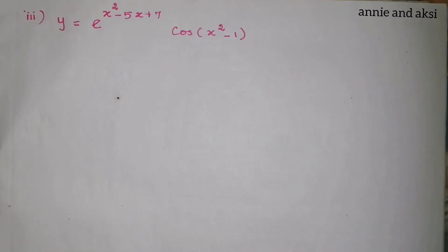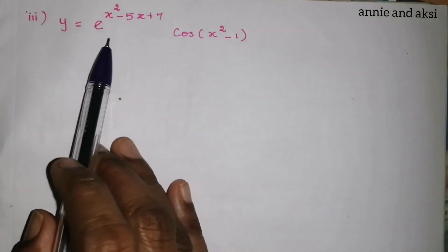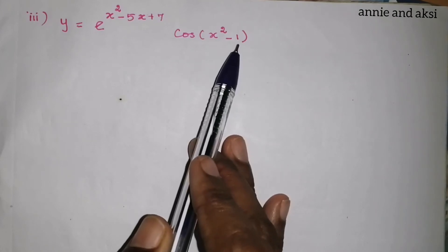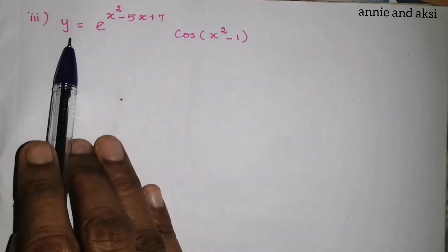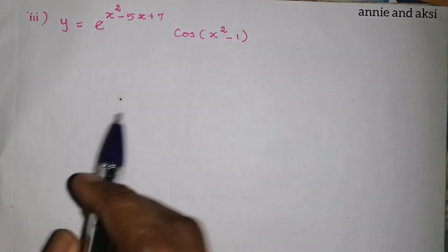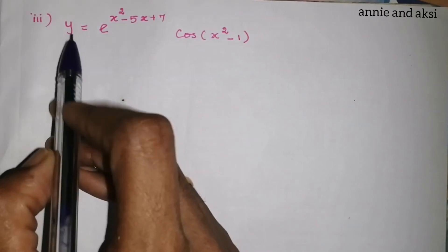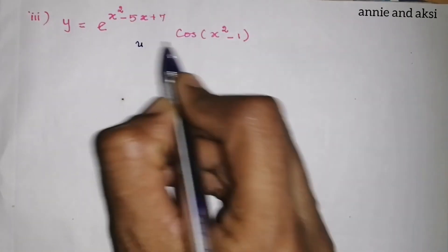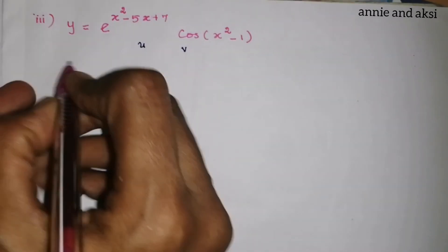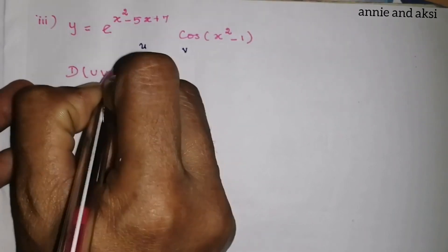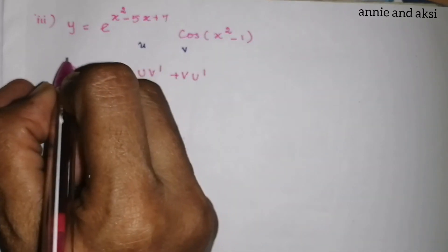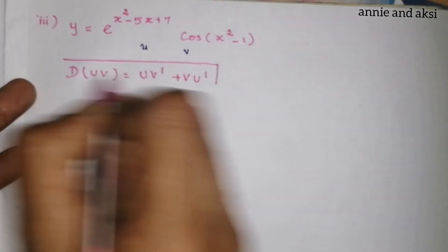For the third subdivision, y is equal to e to the power (x squared minus 5x plus 7) into cos(x squared minus 1). To find dy, we differentiate using the product rule format uv, where the formula is: d(uv)/dx equals u·v' plus v·u'. We identify u equals e to the power (x squared minus 5x plus 7) and v equals cos(x squared minus 1).